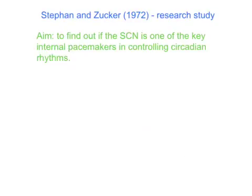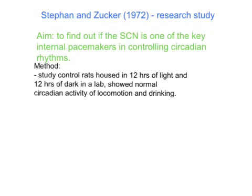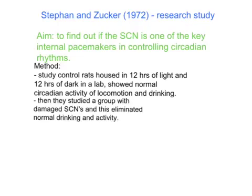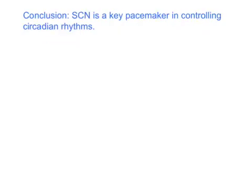The aim of Stefan and Zucker's 1972 study was to find out if the SCN is one of the key internal pacemakers controlling circadian rhythms. They studied control rats housed in a lab with 12 hours of light and 12 hours of dark. These rats showed normal circadian activity linked to locomotion and drinking, with more activity and more drinking during the night — the dark hours. They then studied a group with damaged SCNs and found this eliminated normal drinking and activity patterns, eliminating the circadian rhythm. They concluded that the SCN is one of the key pacemakers in the brain controlling circadian rhythms.